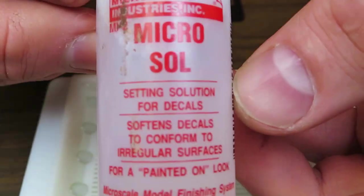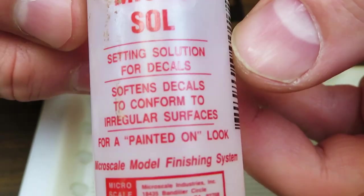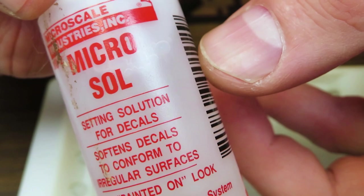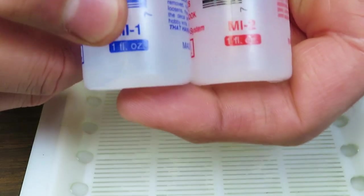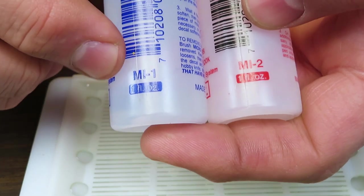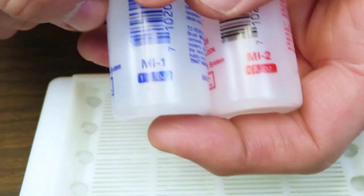And this goes on after the set has dried. You put this on over top of the decal to kind of soften it down and like smooth it out and help it adhere more. See, they're conveniently numbered with a one and a two. So this is your first step and this is your second.